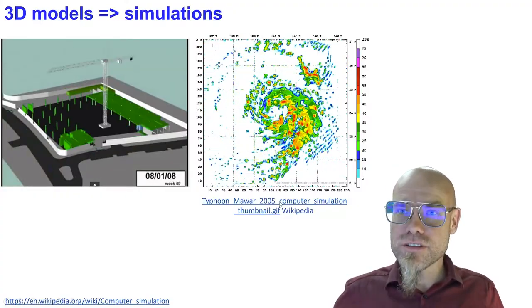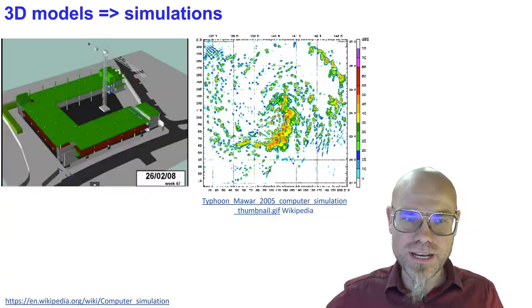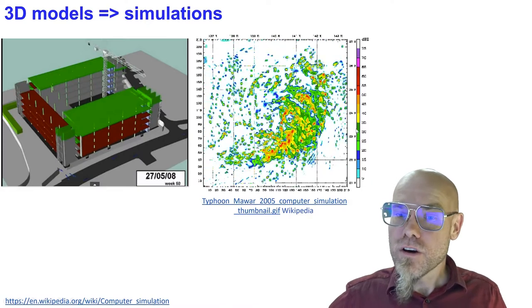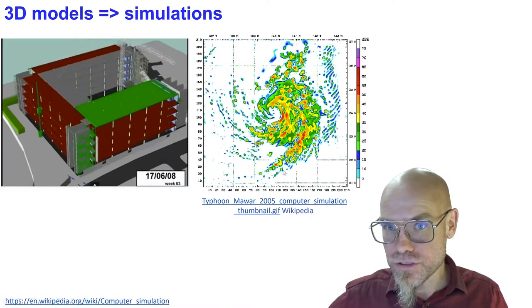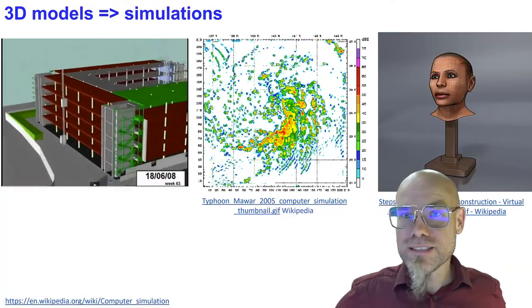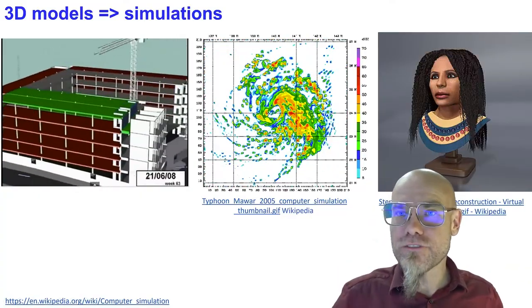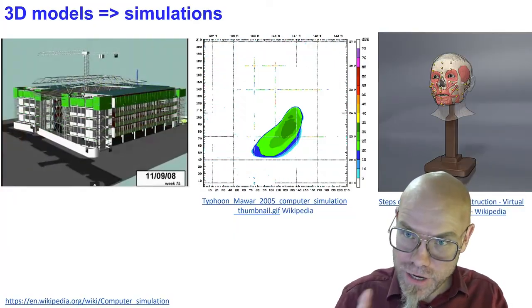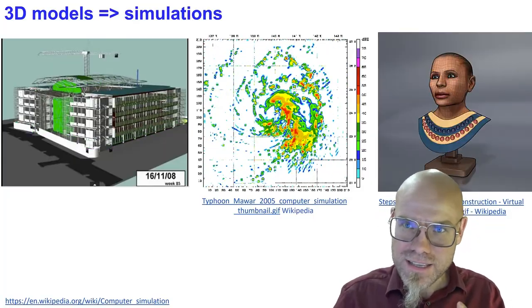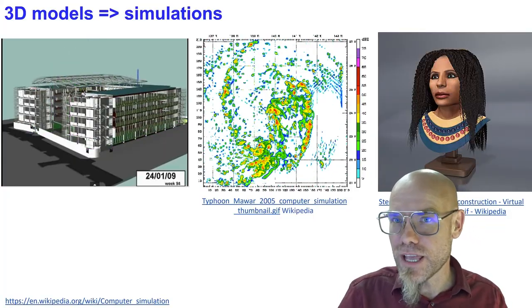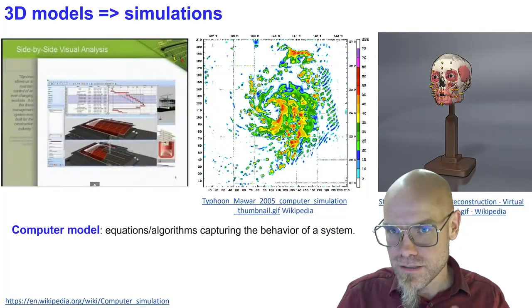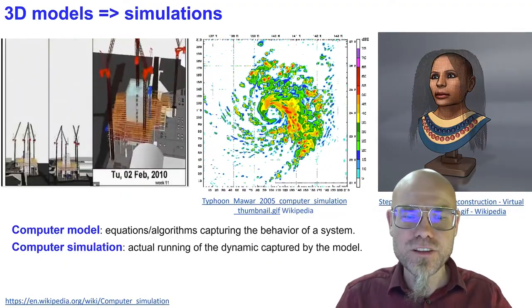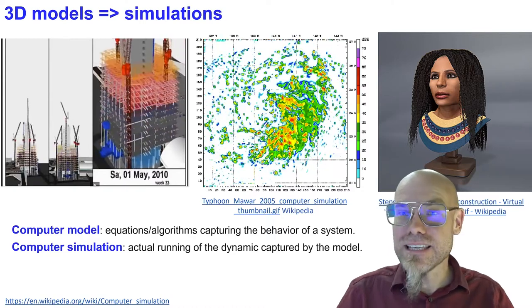Let's start slowly. Traditionally, these computer simulations come from models, from computer models. For example, in engineering, this is basically a design plan of a house, and you can model the different steps of the building. This here captures the equations of the weather, this model, or a forensic facial reconstruction of some historical figure. So we have used these kinds of models, these theoretical models for a long time. And we equilibrate the model with some empirical data to make sure it reflects something, but it's still just a computer simulation based on a model. So a computer model is some equations or algorithms that capture the behavior. That's how the weather does what it does. And the computer simulation is then you run it and see what you get.